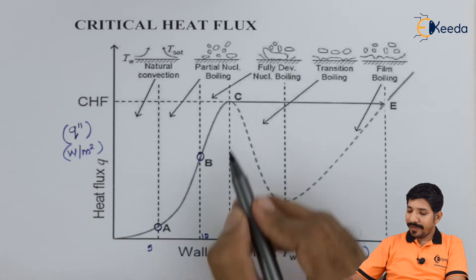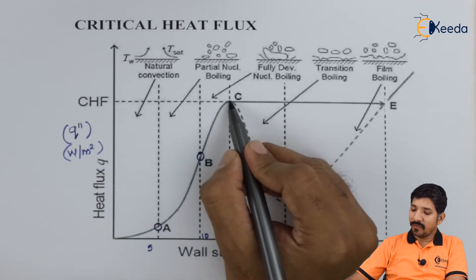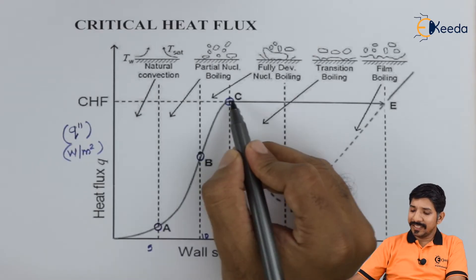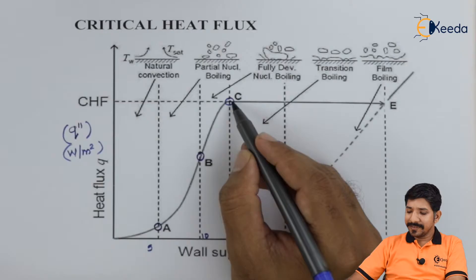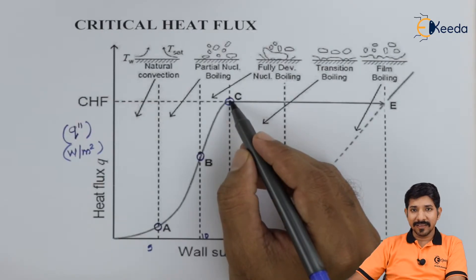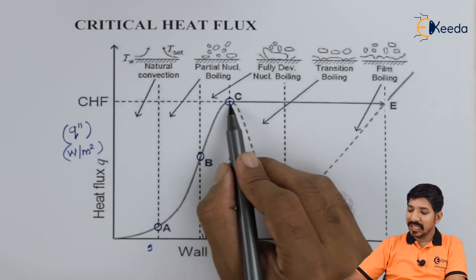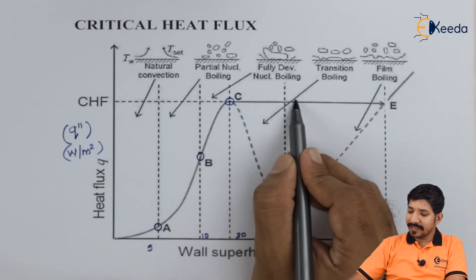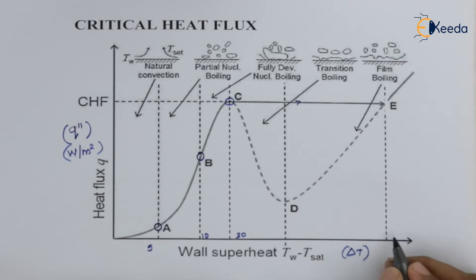When we reach 30 degrees Celsius delta T, we have reached the maximum heat flux. Now what happens after this, if we may reach to this point, the temperature may increase from let's say 30 to approximately 1000.